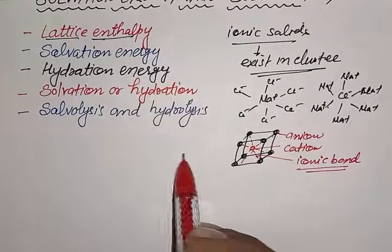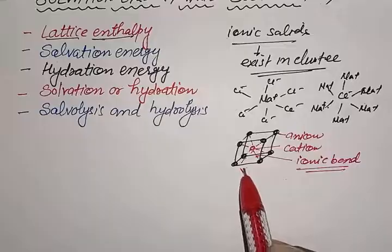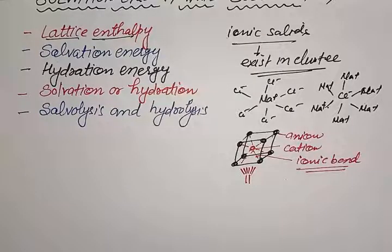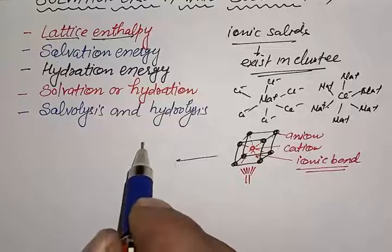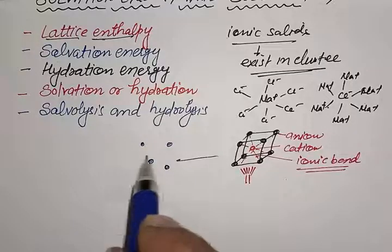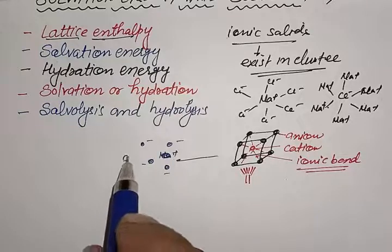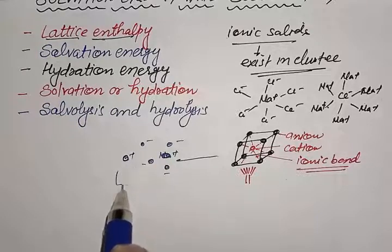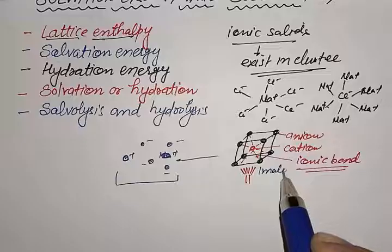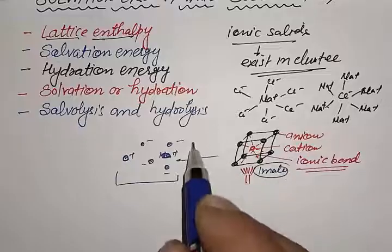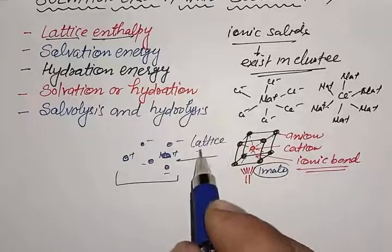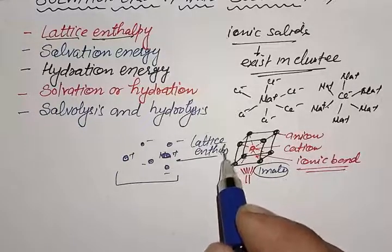If we provide some energy to this unit cell or the crystal lattice of the ionic compound, the crystal lattice will break and these ions — cations and anions — become free to move. The amount of energy required to break one mole of this lattice is called lattice energy, or lattice enthalpy.